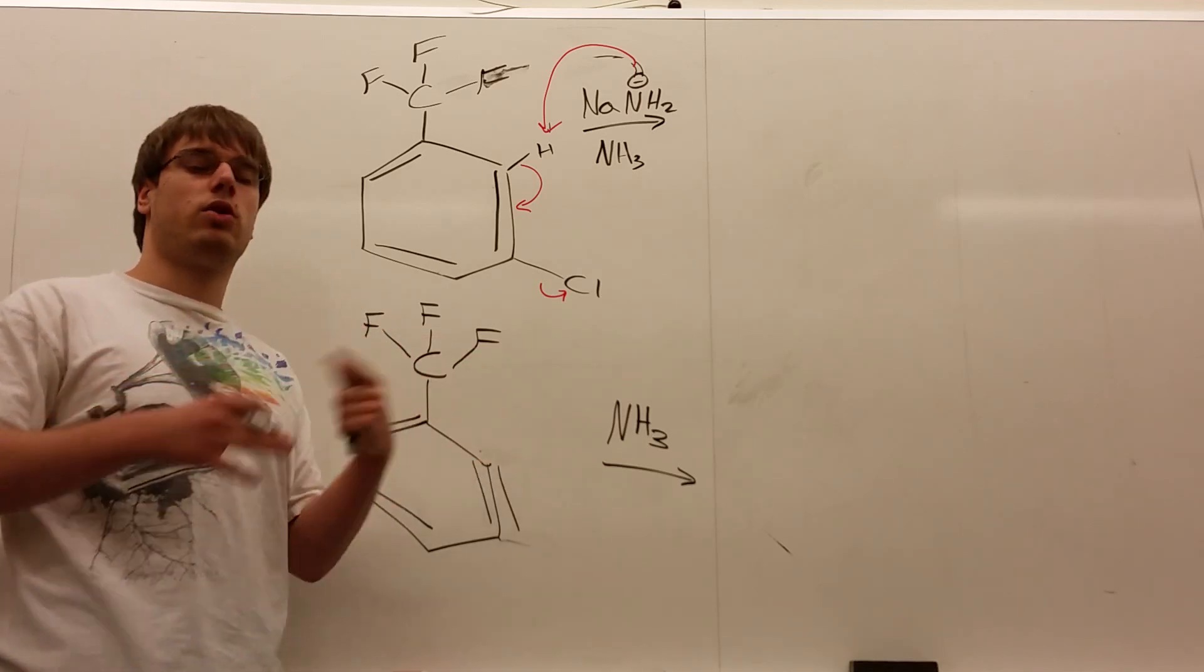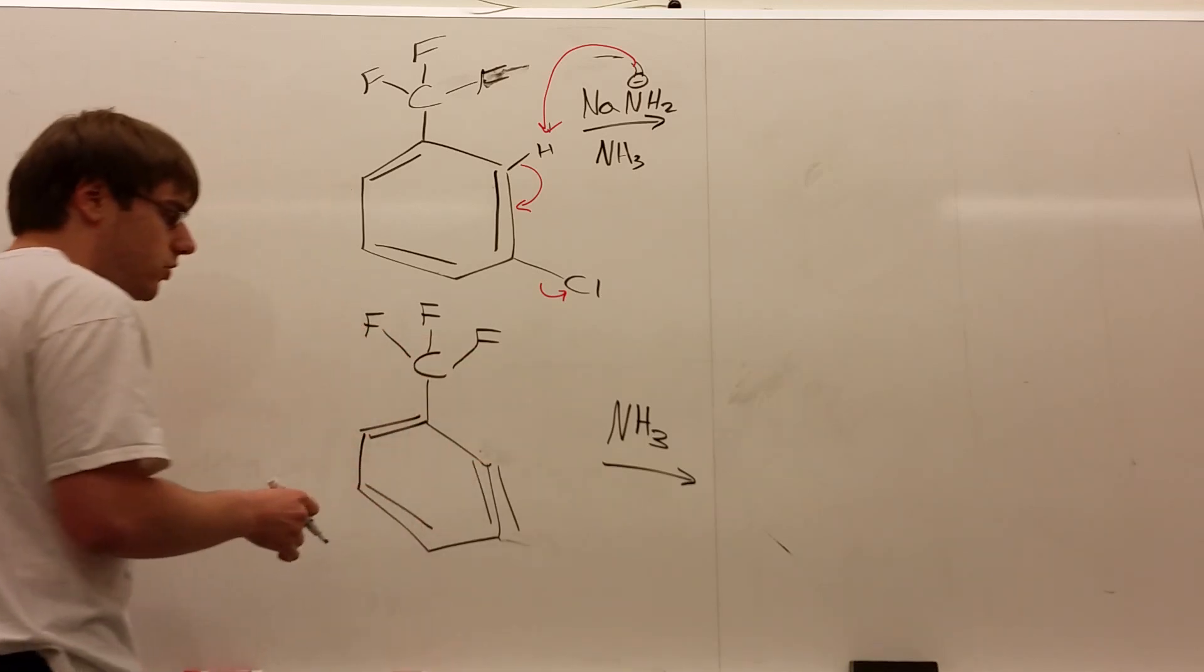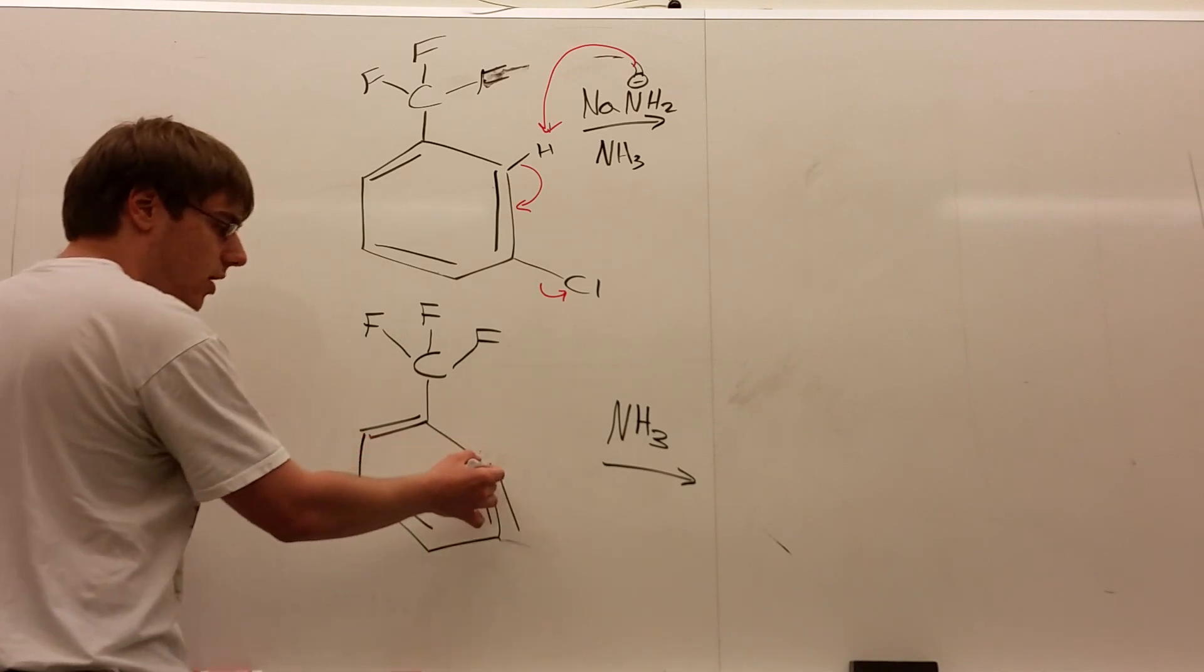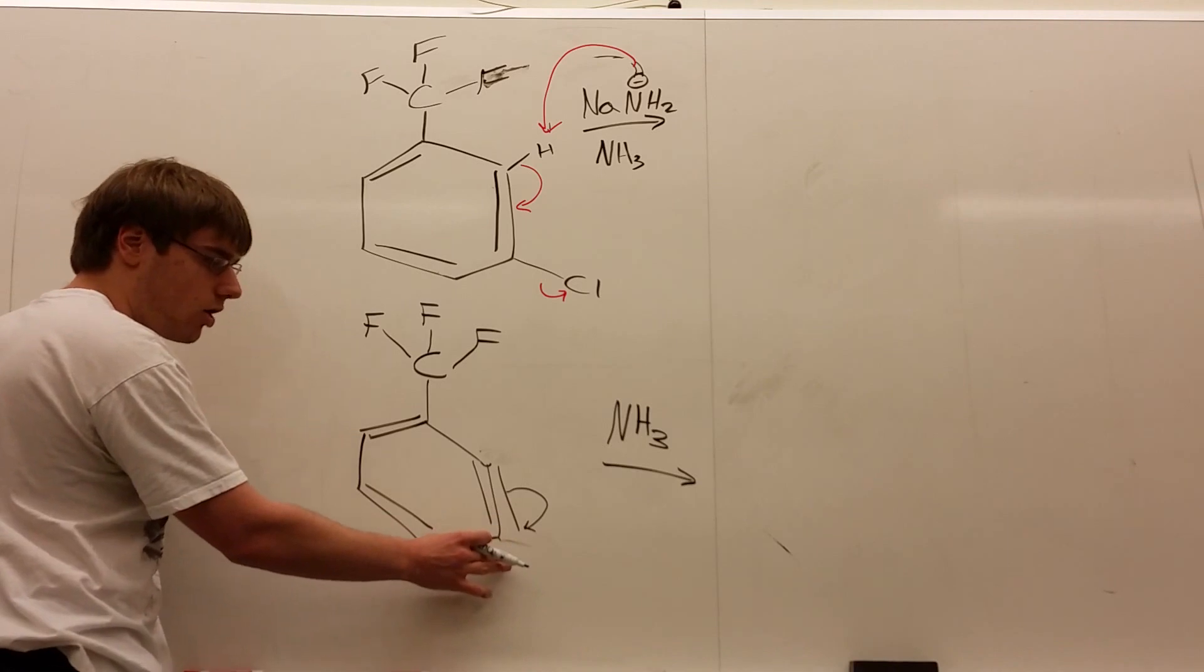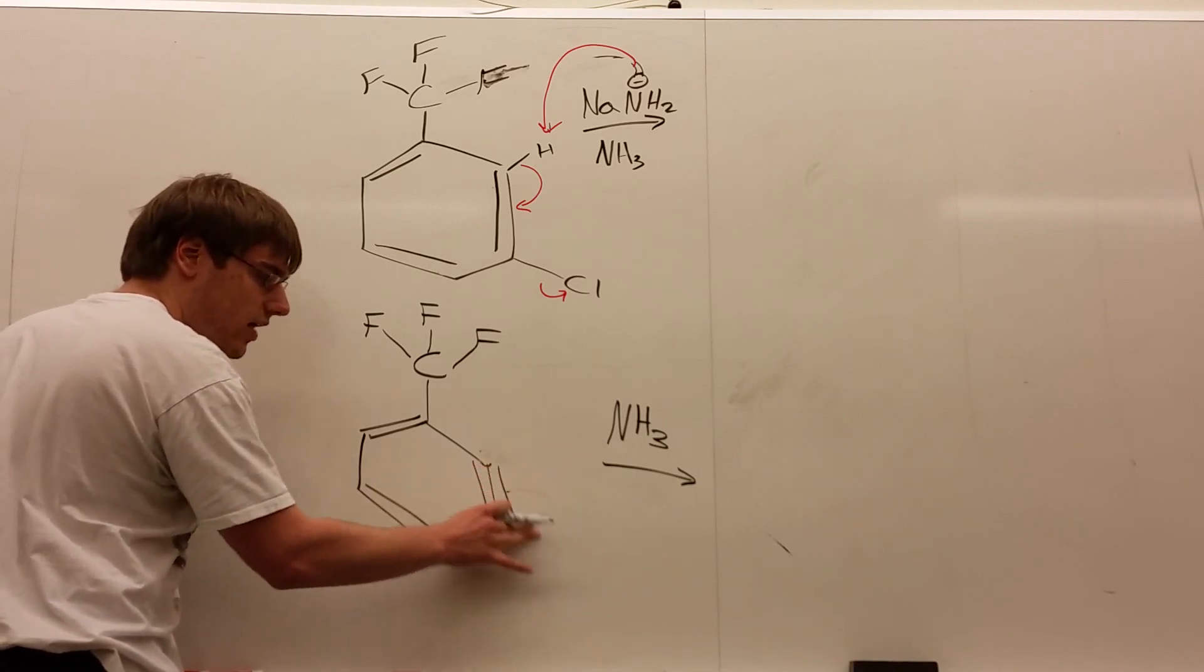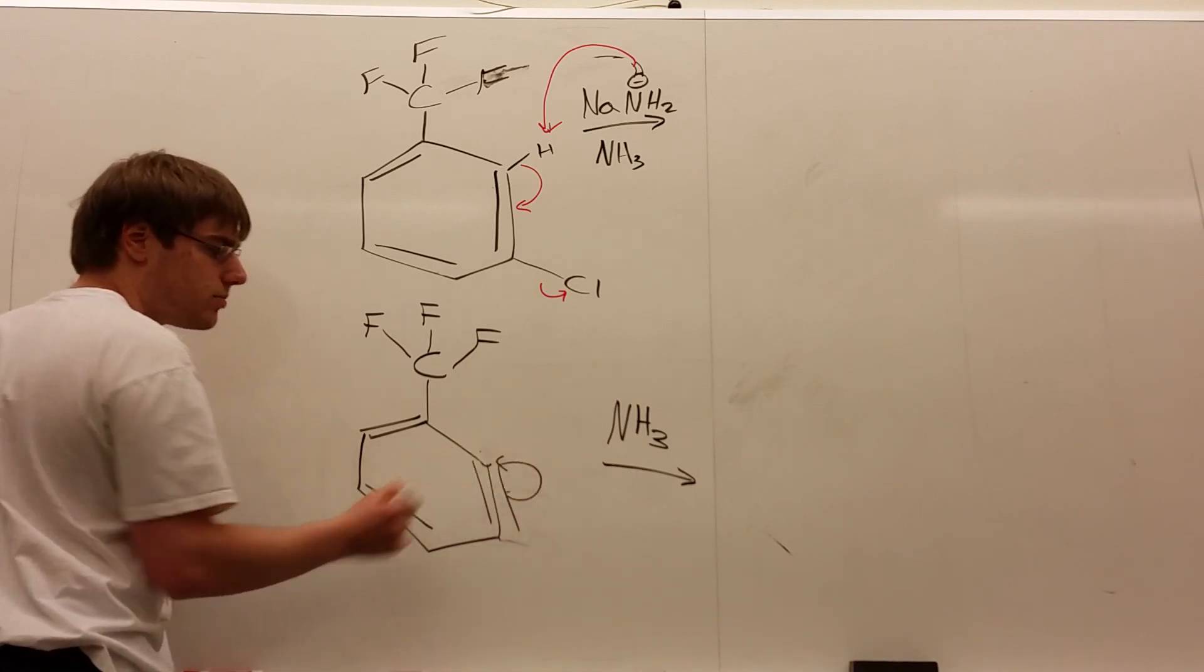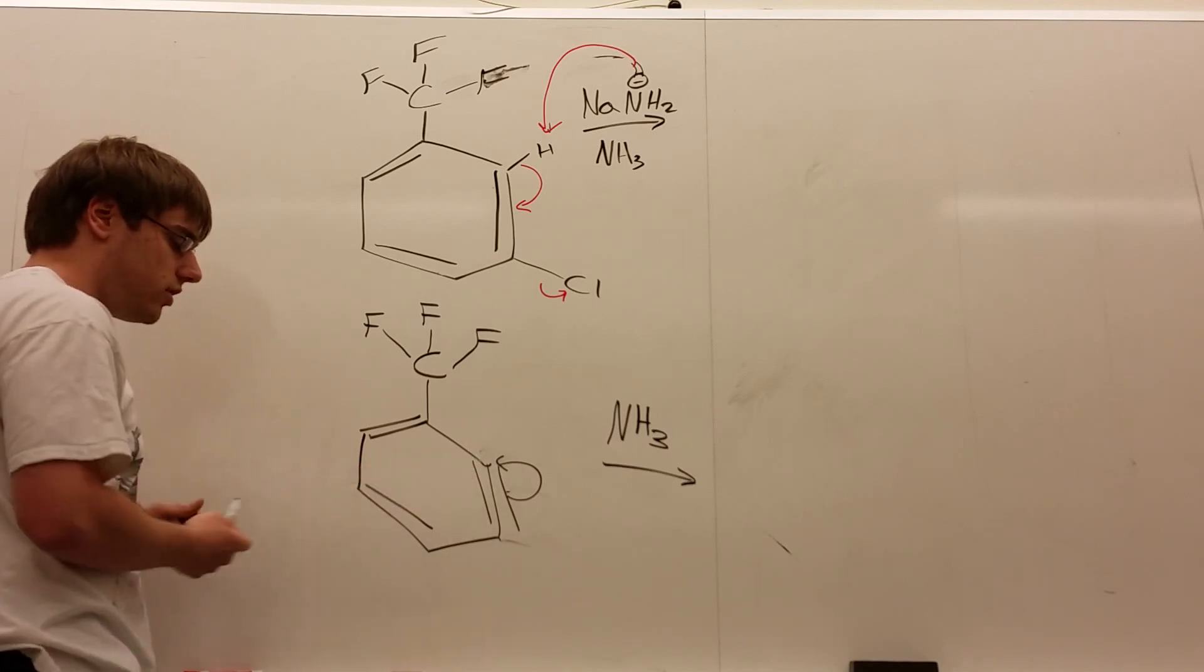that isn't the reasoning behind where this NH3 goes. We have two options. The NH3 can either attack the top, and then the triple bond would resonate down, putting a negative charge on the bottom carbon. Or the NH3 can attack that bottom carbon and push the electrons up to the top, making the negative charge here in the ortho position.